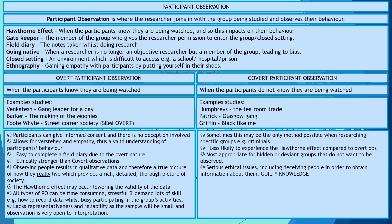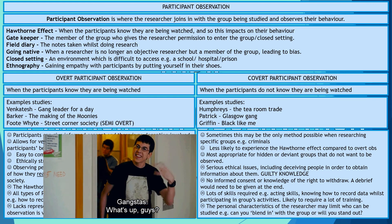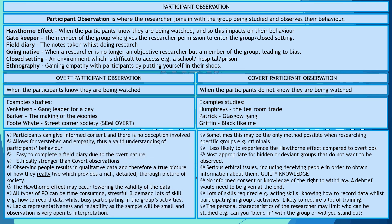The downsides include ethical issues such as deception, lack of right to withdraw, and lack of informed consent. There is potential for guilty knowledge — Patrick found this when he had to commit crimes to maintain his cover. Other problems include the acting skills required, how to record data while undercover, and the personal characteristics needed to blend in and join the group. This has been an overview of participant observation — the overt and covert forms. Thanks for watching.